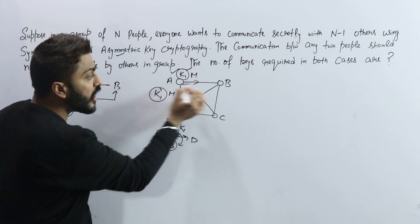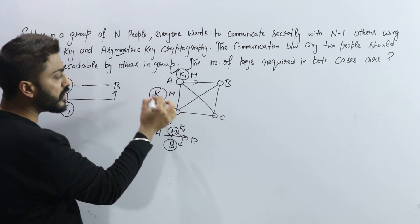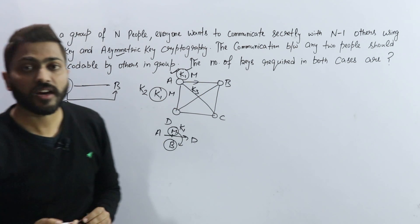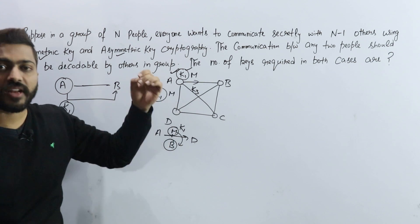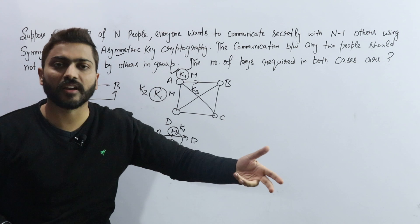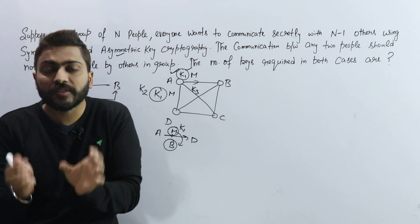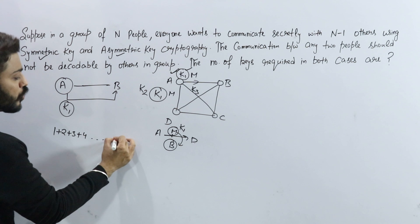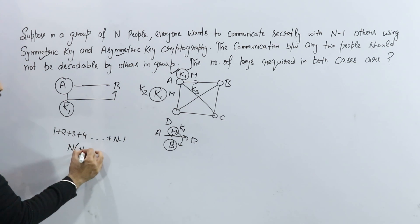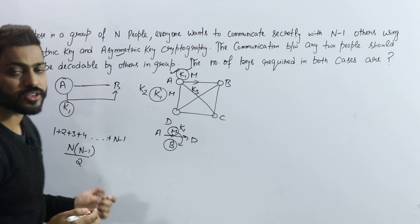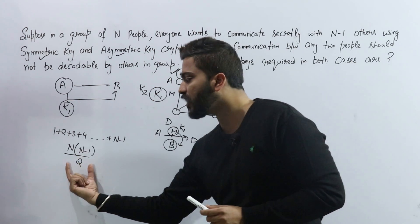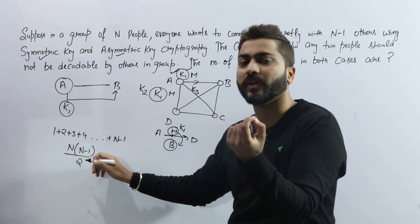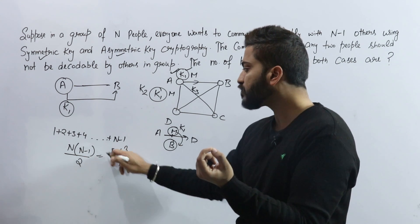So for each pair, A must use a different key. If A wants to send to B using K1, then A sends to D using K2, and A sends to C using K3 — a different key for each pair. This means each person needs N-1 keys. The total number of keys becomes 1 + 2 + 3 + ... + (N-1), which equals N(N-1)/2. This is the same as the formula for number of edges in a complete graph. For N=4: 4×3/2 = 6 keys.